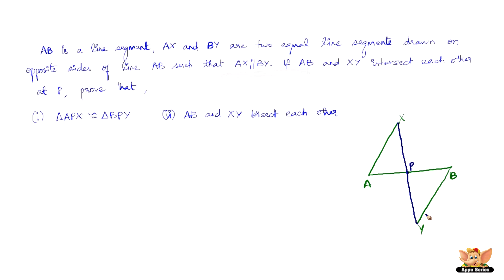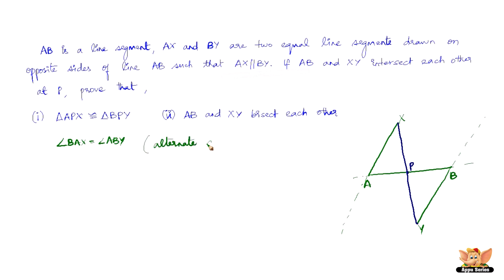Since AX and BY are parallel lines and AB is a transversal — AB intersects the two parallel lines at A and B — therefore we have angle BAX equal to angle ABY. This is because they are alternate angles.